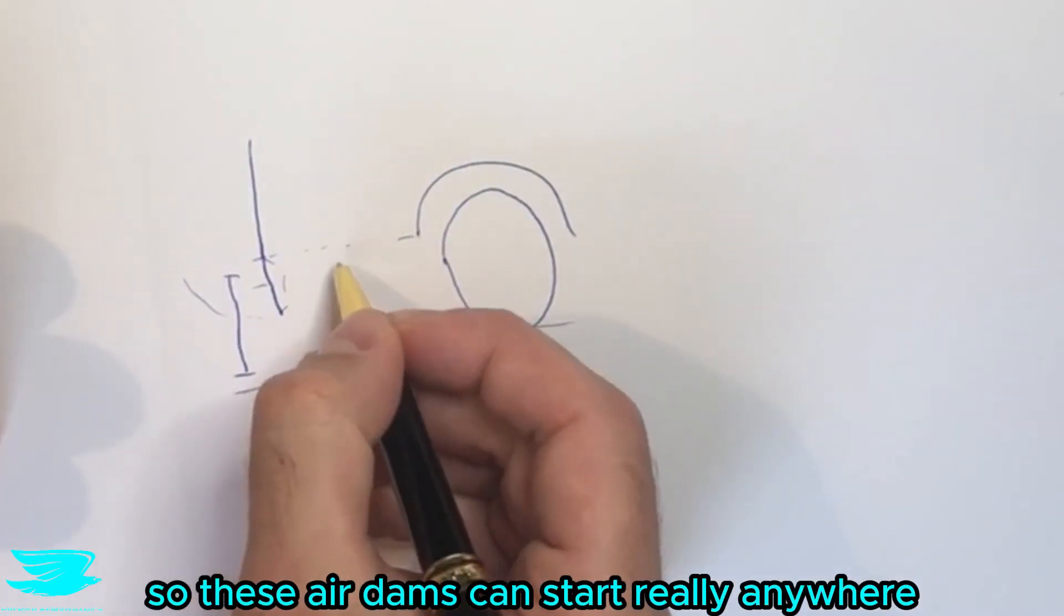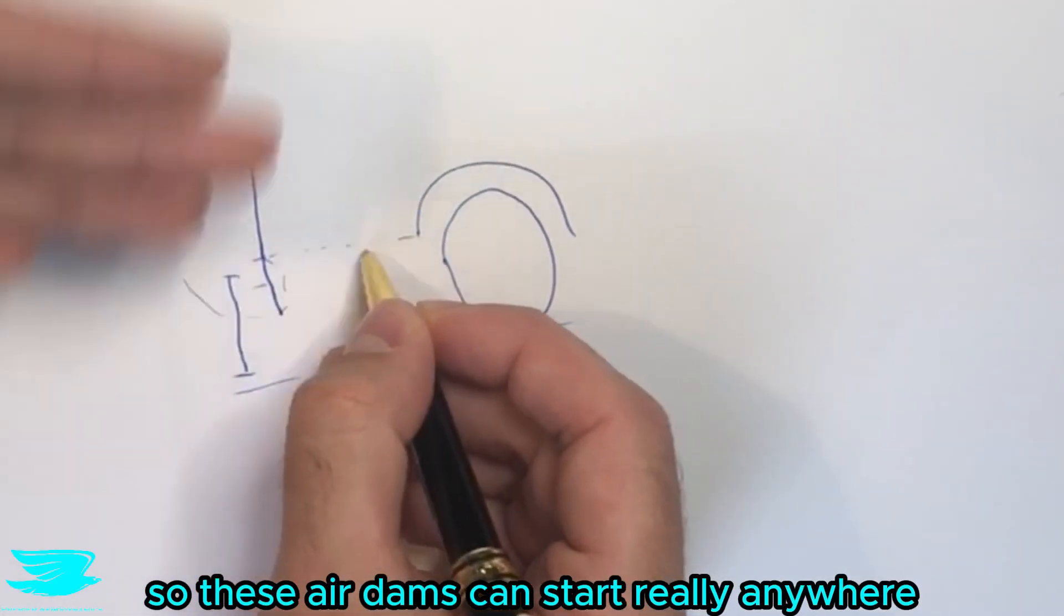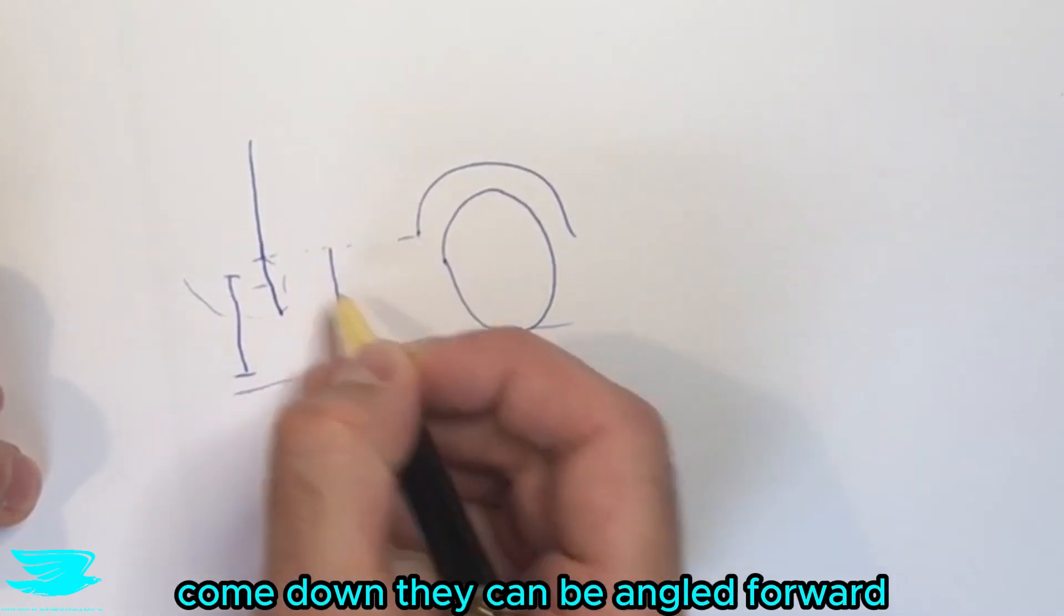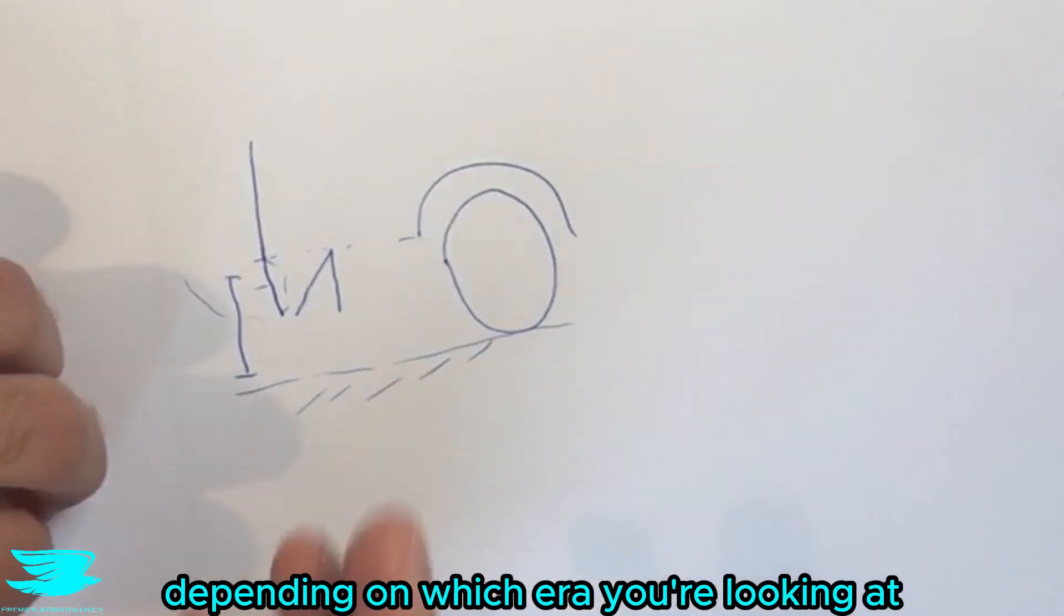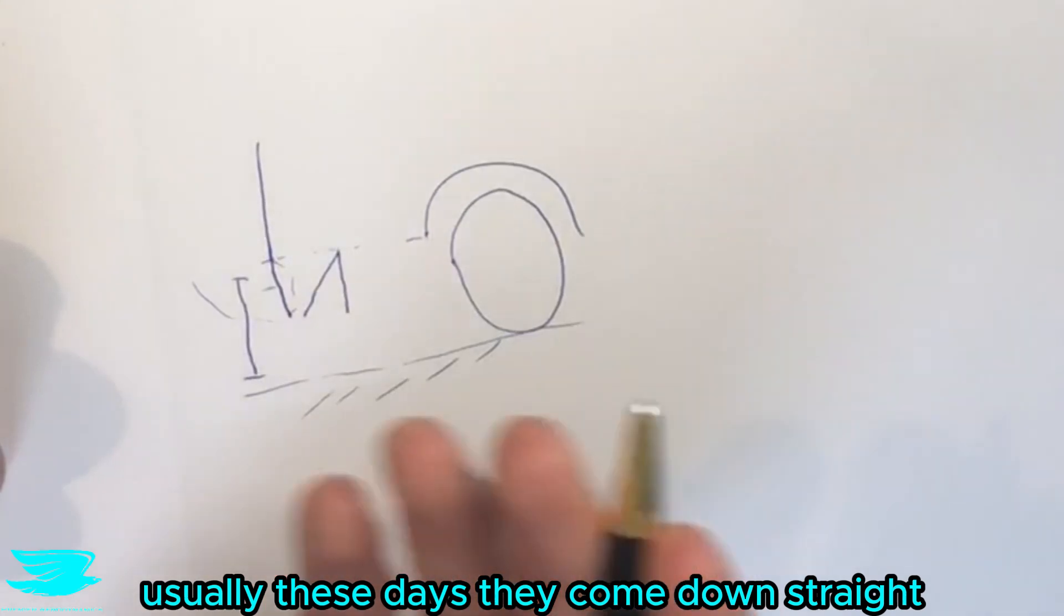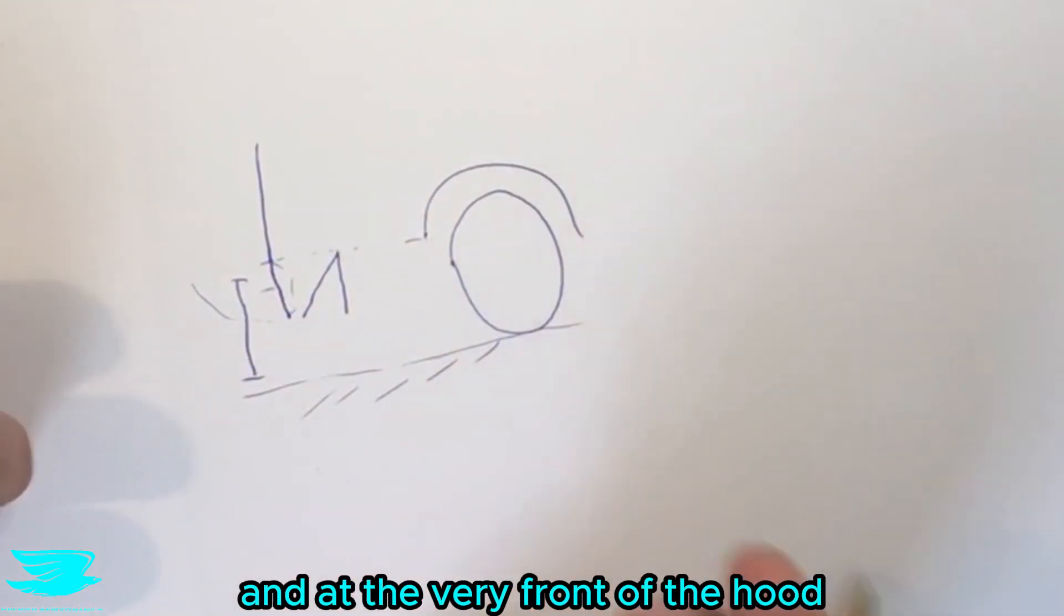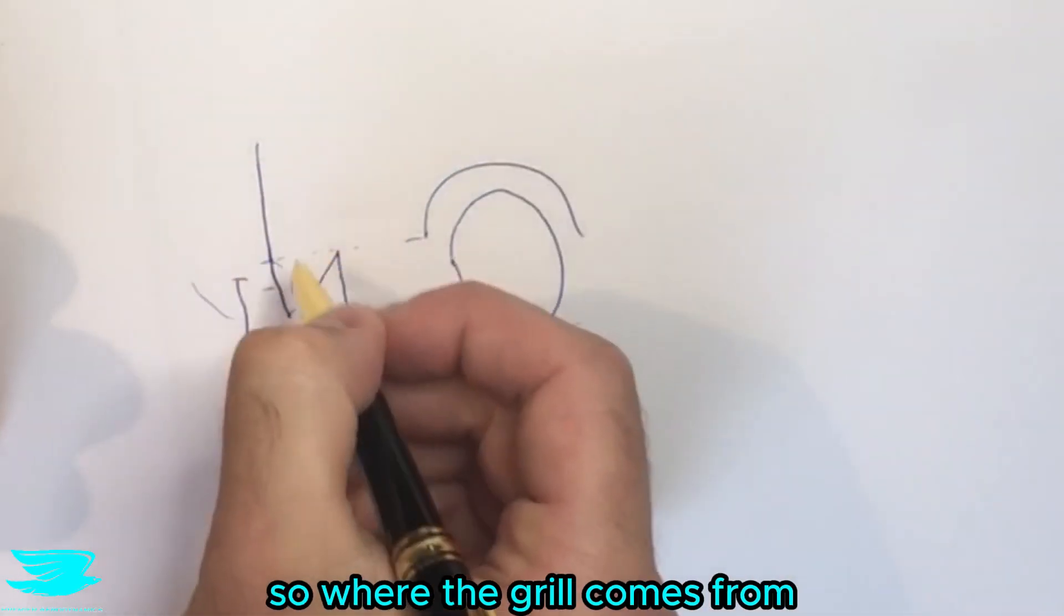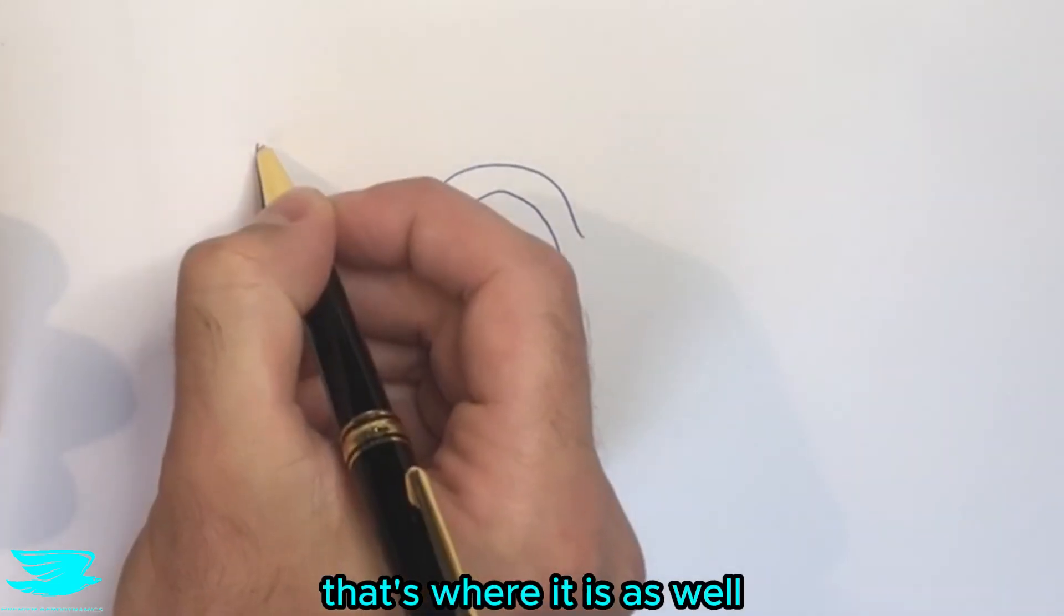So these air dams can start really anywhere in this front part. They can start here, come down, they can be angled forward depending on which area you're looking at. Usually these days they come down straight and they're at the very front of the hood, so where the grill comes from, that's where it is as well.